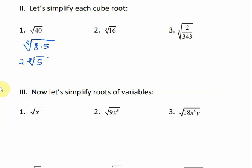For the cube root of 16: 8 will divide into 16, and 8 is a perfect cube. So 8 times 2 is 16. The cube root of 8 is 2, so 2 comes on the outside, and 2 stays under the radical.